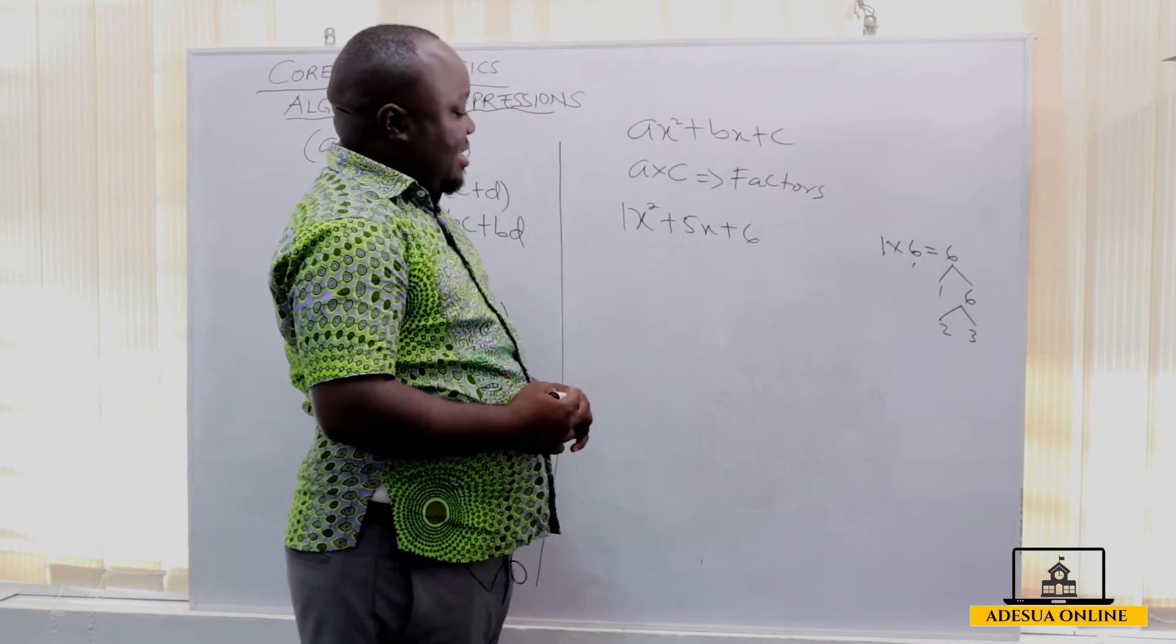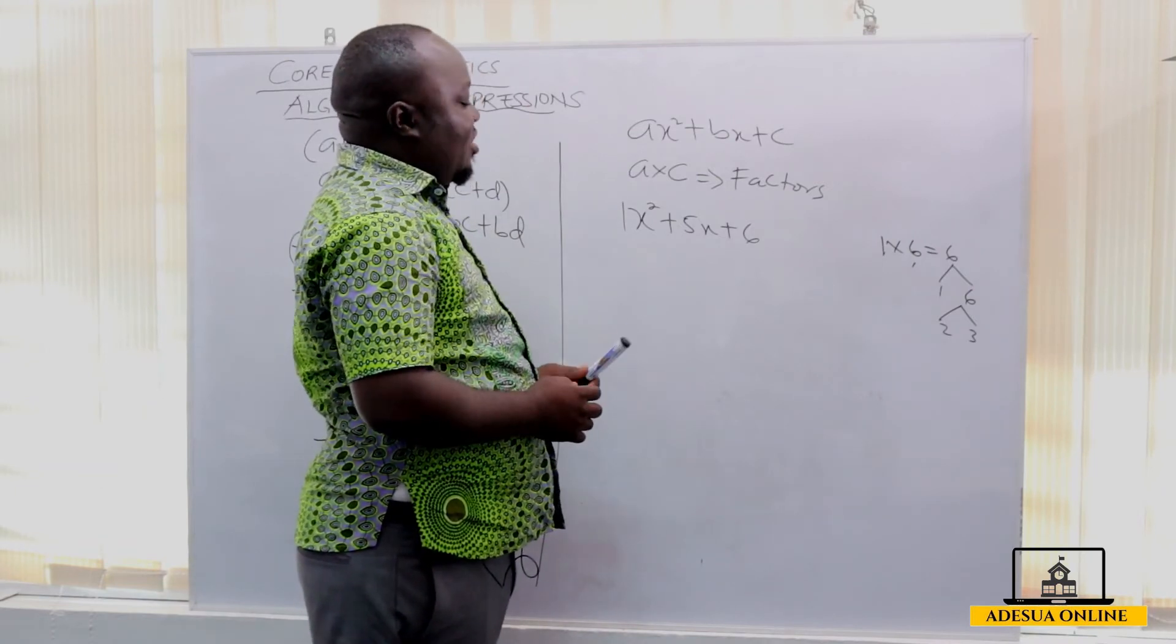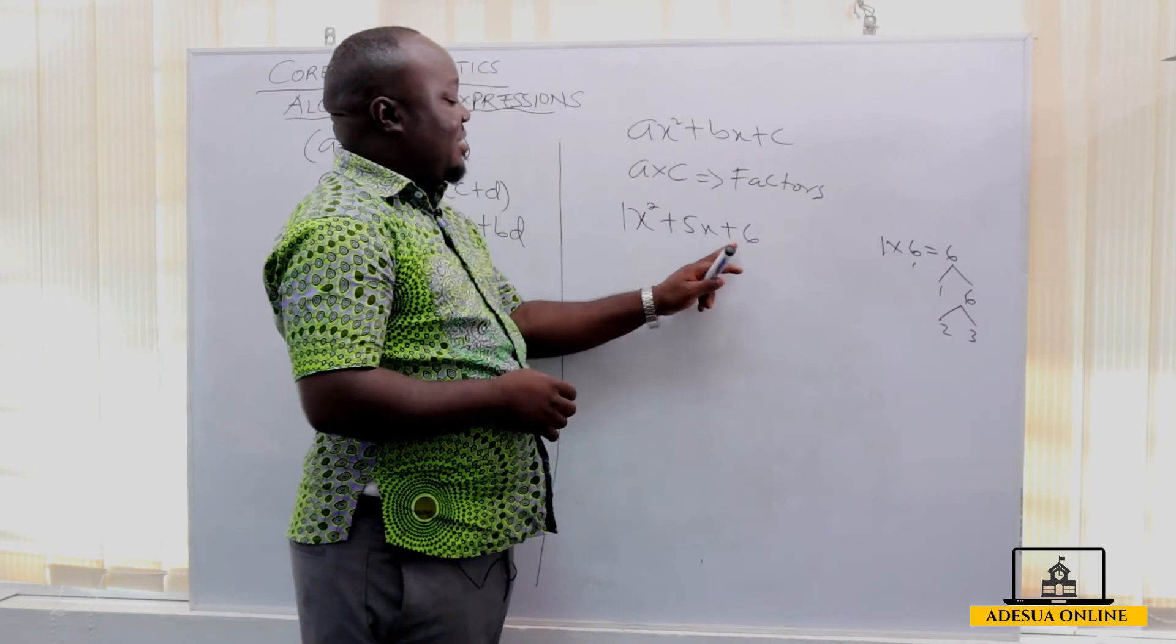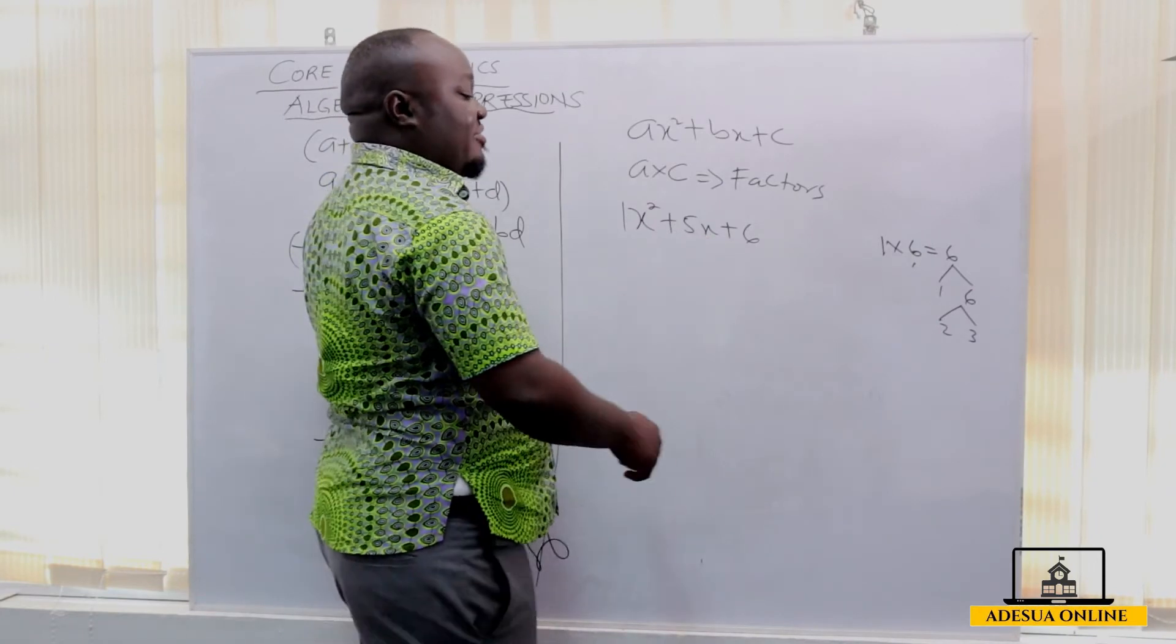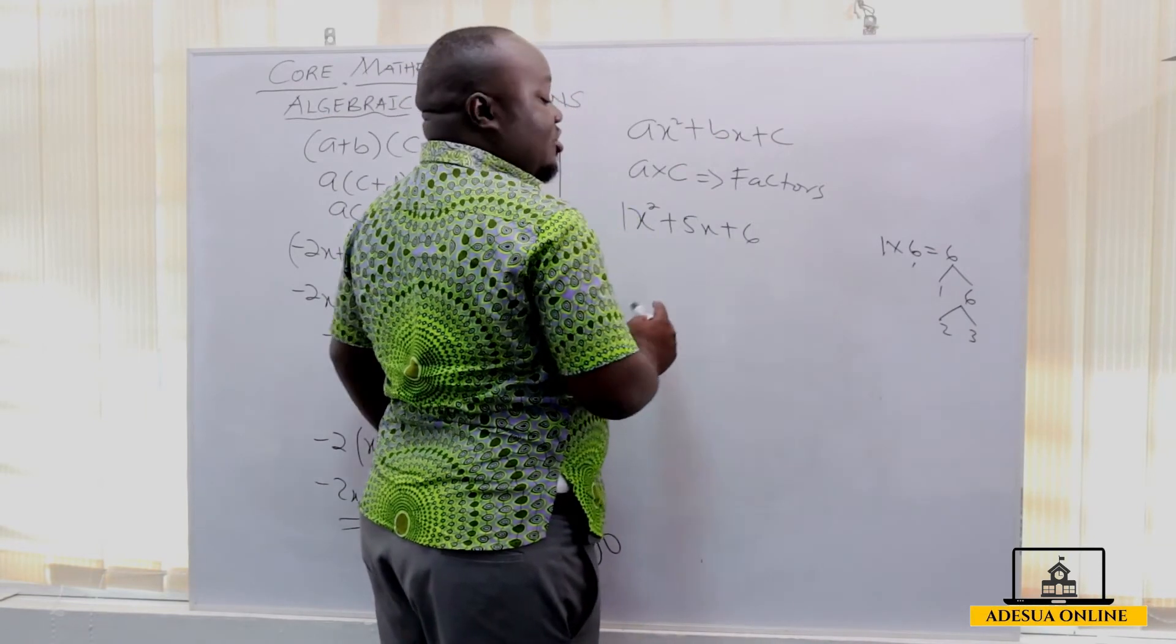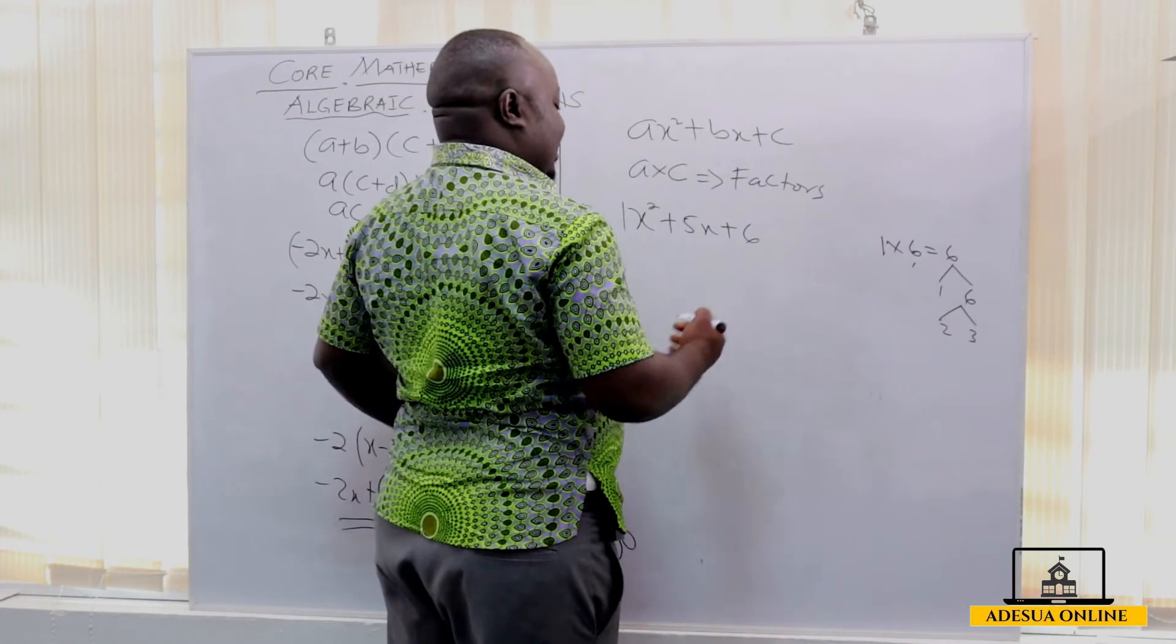Now if I should add 2 and 3, we have to look for a number when we multiply we get 6 and when we add we get a middle term 5. Now if I should add 1 plus 6, I'll get 7. But if I should add 2 and 3, I'll get 5. So my factors in this case are 2 and 3.